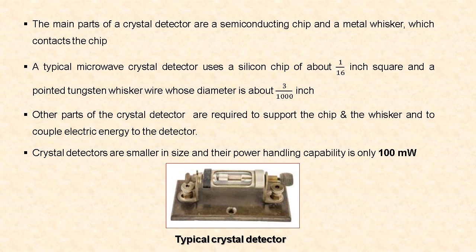A pointed tungsten whisker wire whose diameter is about 3/1000 inch is also used. The other parts of the crystal detector are just to support the chip and the whisker, and to couple the electrical energy to the detector. These crystal detectors are smaller in size, and hence their power handling capability is only 100 milliwatts.